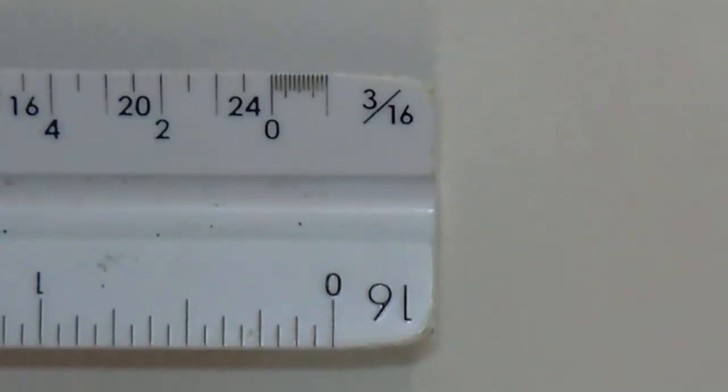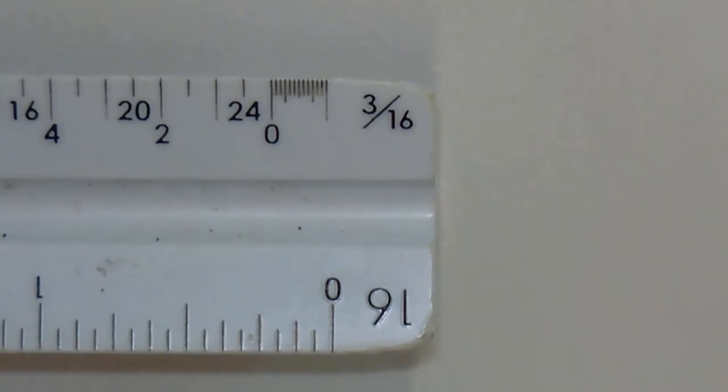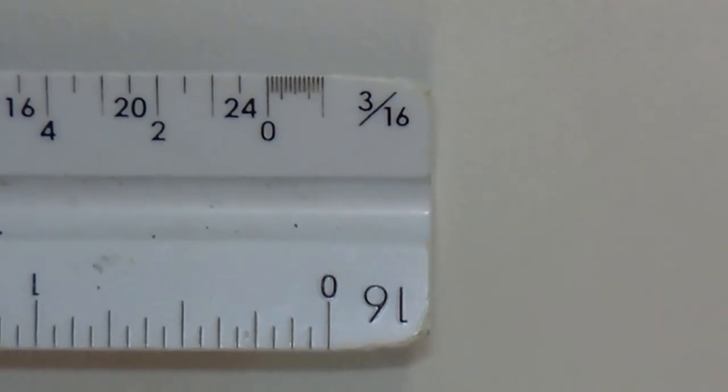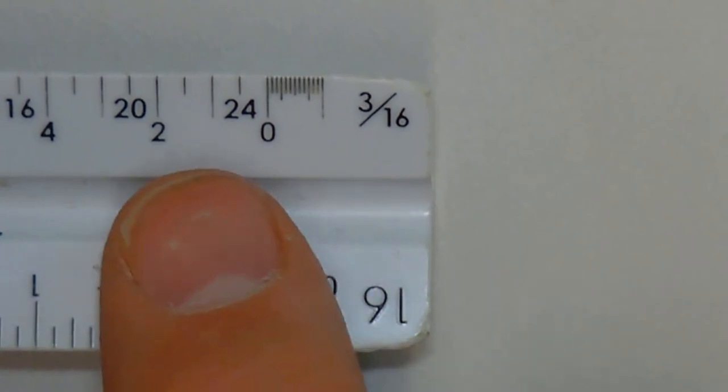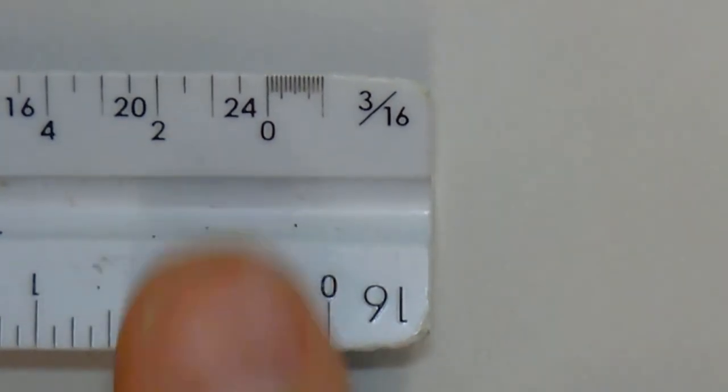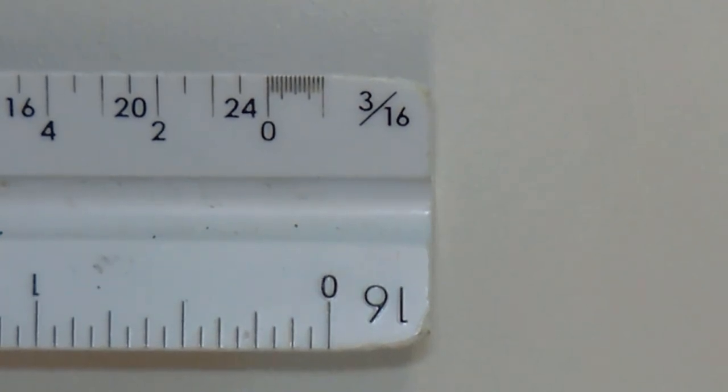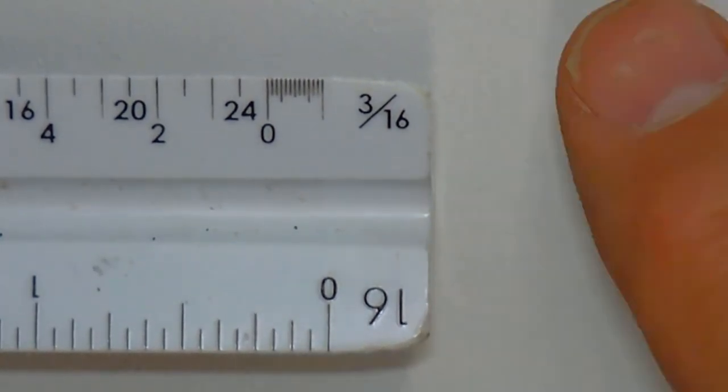You can see that to the right of the zero are smaller increments. The space between the zero and the first large line is equal to one foot in real life. The individual increments to the right of the zero are equal to one inch in real life.